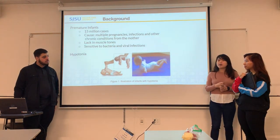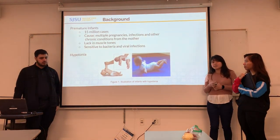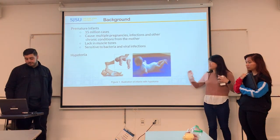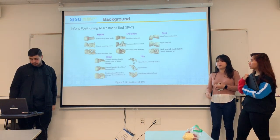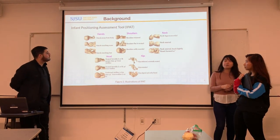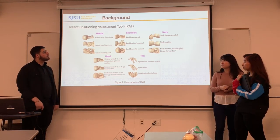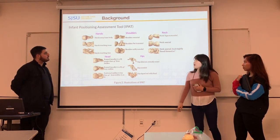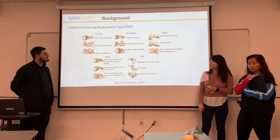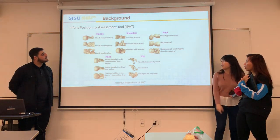One of the common cases for premature infants is Hypotonia, and as you can see, this is like a floppy syndrome for the baby — their arms and legs are really floppy. One of the treatments for Hypotonia is the Infant Positioning Assessment Tool (IPAT), and as you can see in the picture, it shows the way to position the infants — the hand, shoulder, neck, head, and hips.